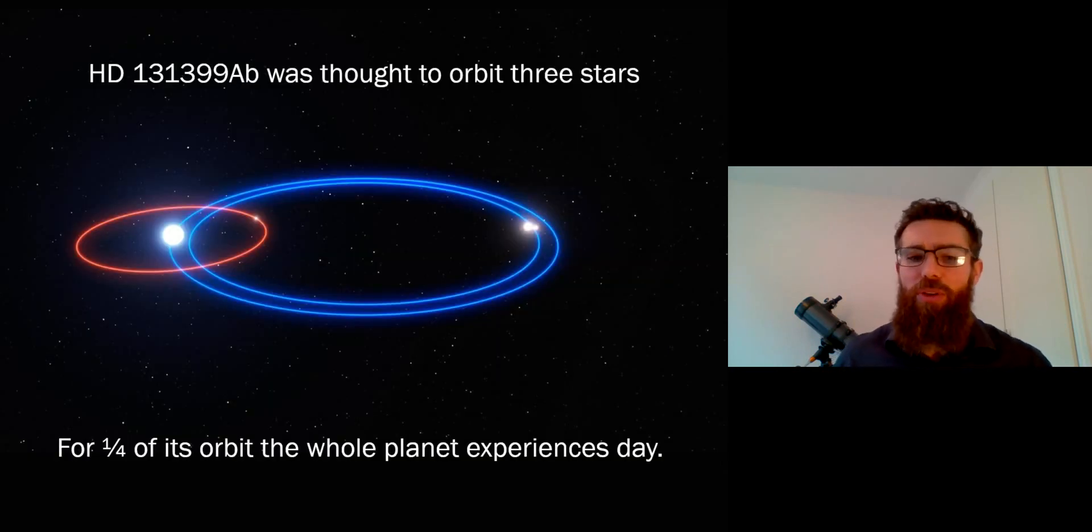But it hasn't been the only triple star system thought to have actually had a planet in it. So this is another one, this was HD 131399 Ab.